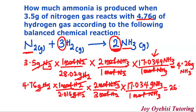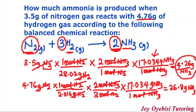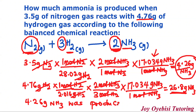That gives us 26.8 grams of ammonia. Now comparing: from nitrogen we got 4.26 grams, and from hydrogen we got 26.8 grams. Because nitrogen gives the smaller amount, the limiting reactant is nitrogen, while hydrogen is the excess reactant. And because nitrogen is the limiting reactant — which limits the amount of product formed — the grams of ammonia you report is 4.26 grams of ammonia produced.